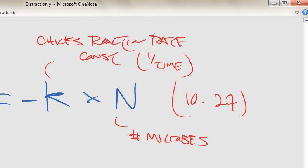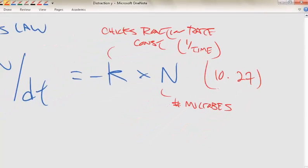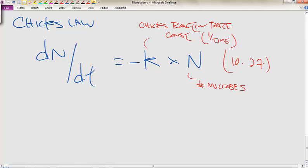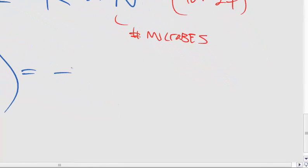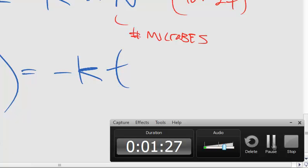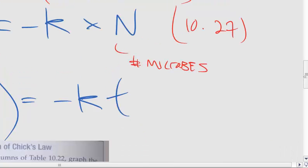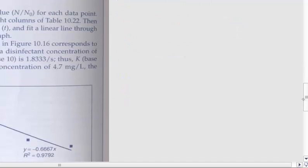The change in rate, number of microbes over change in time, you can integrate and simplify this. It's natural log N over N naught, population over population naught at some particular time, negative KT. There's a really good example problem that has been provided in your textbook. I have example 10.7 in your textbook.